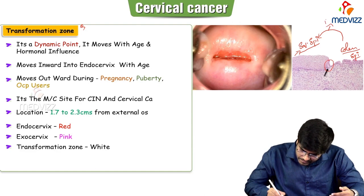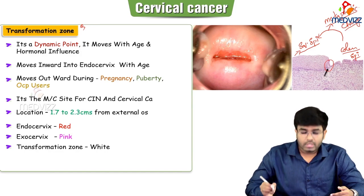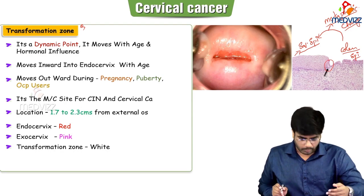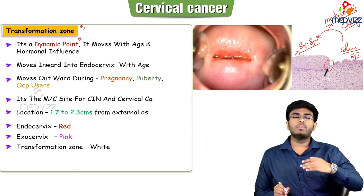In the name itself it's very clear that there is some transformation happening. The endocervix, or the cervical canal, is lined by the columnar epithelium, and the exocervix, which is more toward the vagina, is lined by squamous epithelium. The junction where columnar epithelium is converted into squamous epithelium is known as the squamocolumnar junction or transformation zone. This is a metaplastic change. The transformation zone is a dynamic point — it moves inwards and outward.